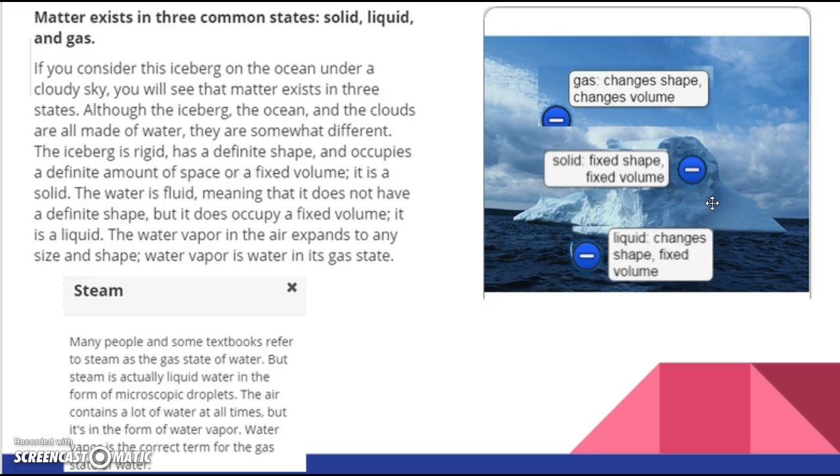And water that is in the gas form is called water vapor. So we're going to pause down here and talk about steam. Many people in some textbooks refer to steam as the gas state of water. But steam is actually liquid water in the form of microscopic droplets. In other words, steam is liquid. It's just so tiny that basically it just goes through the air and floats around. The air contains a lot of water at all times, but it's in the form of water vapor. Water vapor is the correct term for the gas state of water. Don't worry. If you write steam, I'm not going to mark it wrong. Okay, as far as I'm concerned, you can say steam or water vapor. But I did want to point out that there actually is a difference.